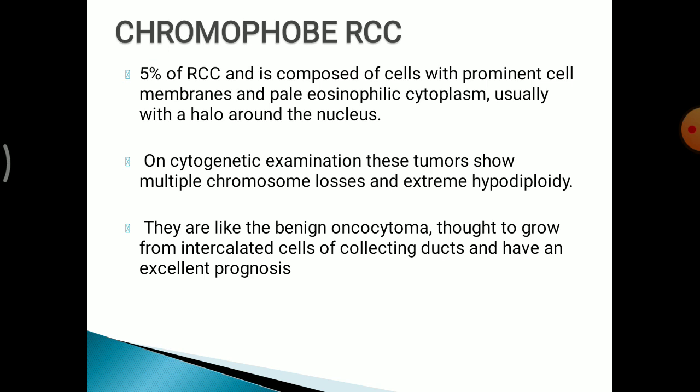Chromophobe RCC comprises 5% of RCC and is composed of cells with prominent cell membranes, pale eosinophilic cytoplasm with a halo around the nucleus. On cytogenetic examination, these tumours show multiple chromosome losses and extreme hypodiploidy. They are thought to grow from intercalated cells of collecting ducts, similar to benign oncocytoma, and have an excellent prognosis.